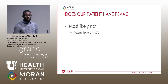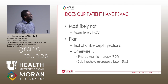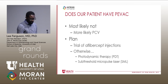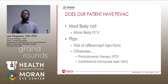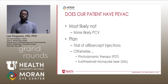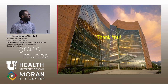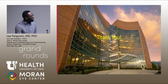Going back to the question — does our patient have this PVAC phenomenon? Most likely not. This is probably more likely a polypoidal choroidal vasculopathy. Our plan in terms of treatment is to try a different approach: instead of Avastin, we want to try EYLEA and see if there's a possible response. If there is no response after three trials of EYLEA, we could consider either photodynamic therapy or subthreshold micropulse laser as a potential treatment.